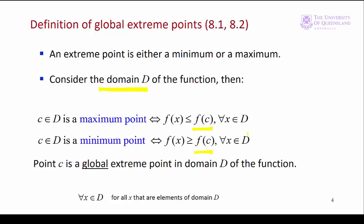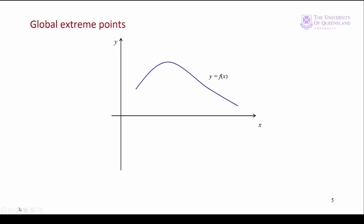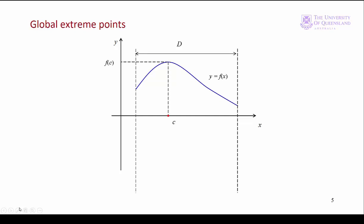We have some more maths notation here. That inverted 'a' means 'for all x' — so for all x that are elements of the domain d. This is how that looks graphically. We have a function y equals f of x and we have the domain specified. Some point c where f of c is the largest value of the function over that domain, and similarly for the minimum, f of x — c will be a global minimum point.